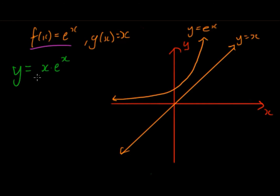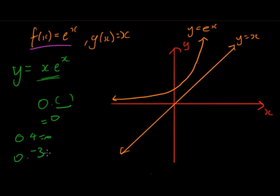Now we need to find what the product form is. Firstly, 0 times anything will just equal 0 — for example, 0 times 4 equals 0, 0 times negative 3 equals 0. So looking at the graph, at y = x, when x equals 0, the g(x) part is equal to 0. Because of that, the product function is also going to be 0. Here e to the 0 is just 1, but 1 times 0 is obviously 0.